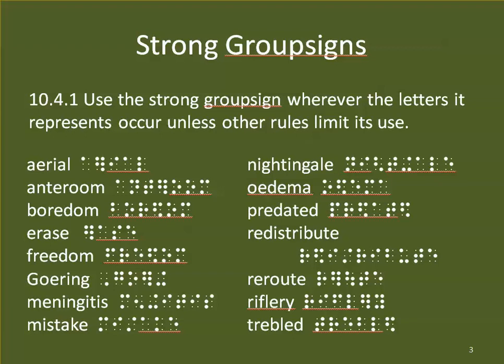We're going to see these contractions a lot more than we did before, including words that have diphthongs in them like 'ariel,' or two small words making a compound word like 'anteroom.' Boredom — we can use the ED. Erase — we can use the ER a lot more than before. Freedom — we have an ED there even though it bridges syllables. Goring — even though it's a diphthong, we can use the ER. Meningitis — we can use the ING. And mistake — we are going to use the ST contraction. So now using ST for 'mistake' is no longer a mistake.